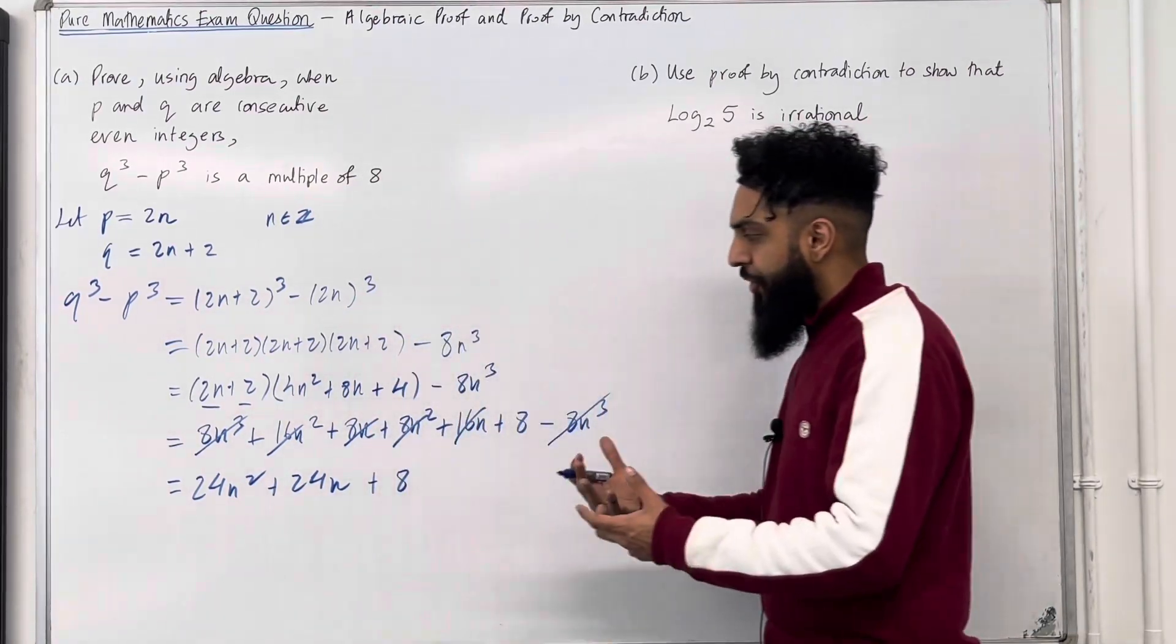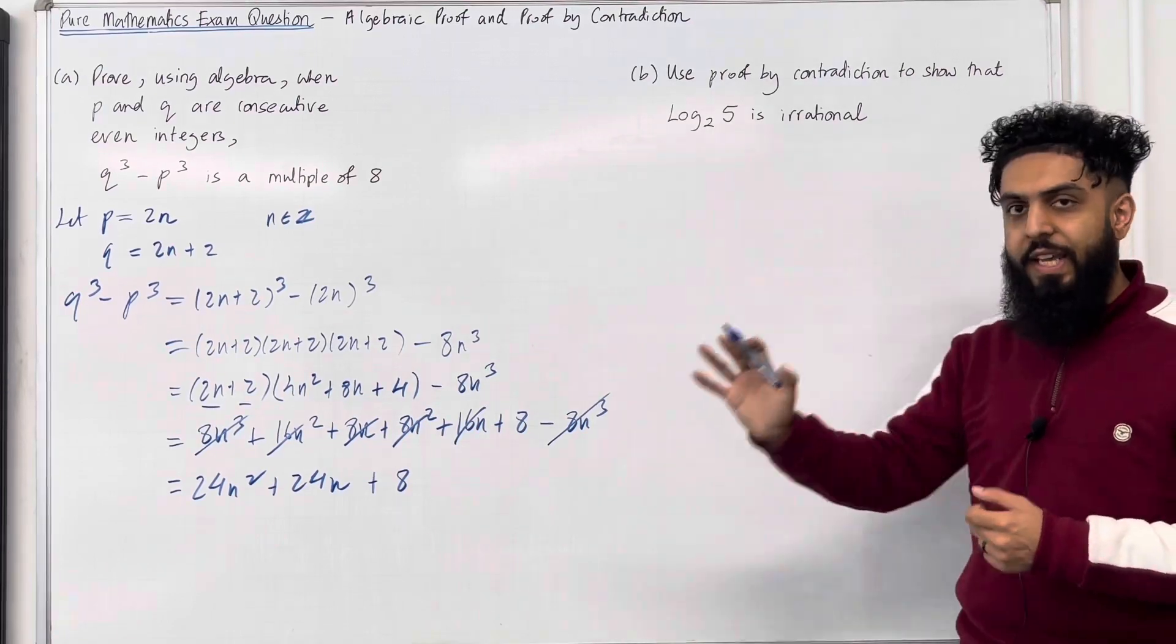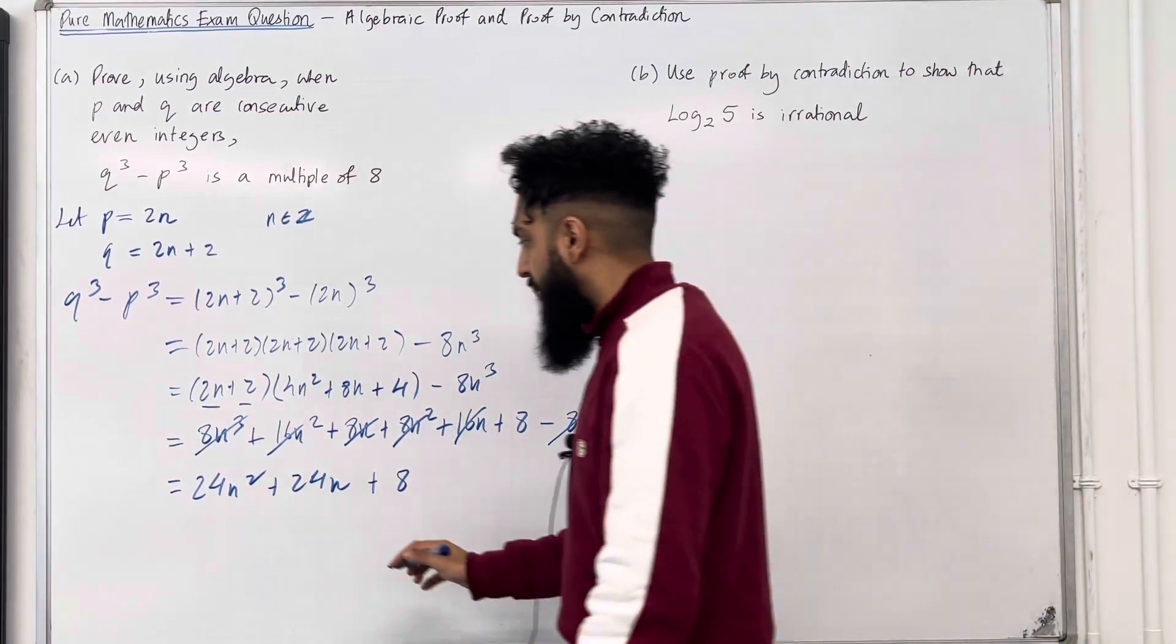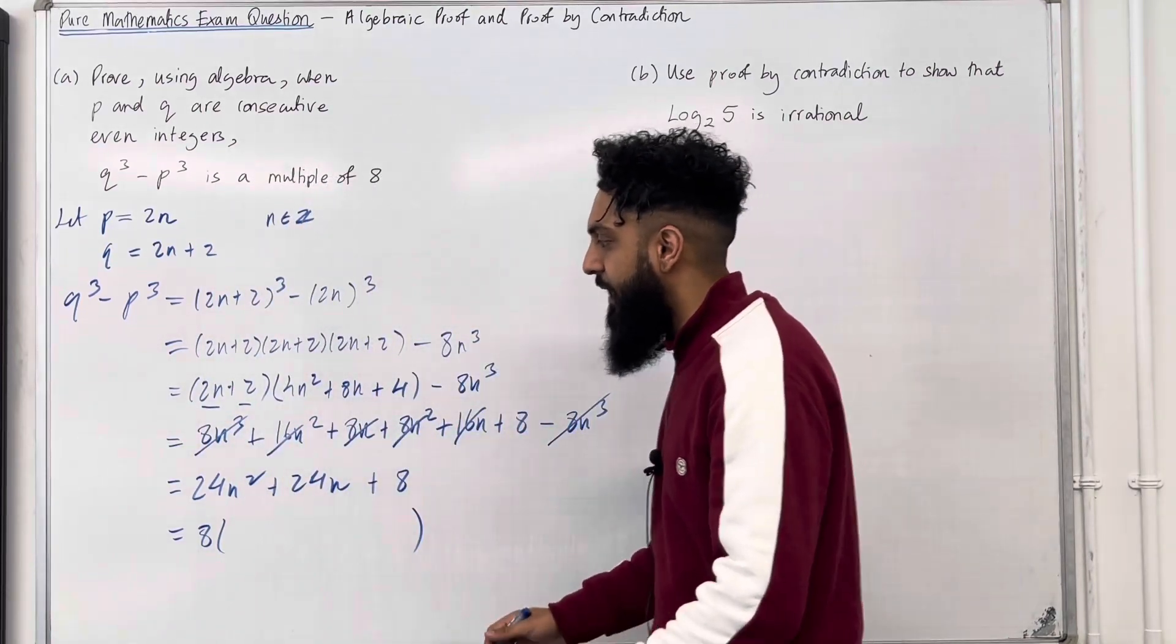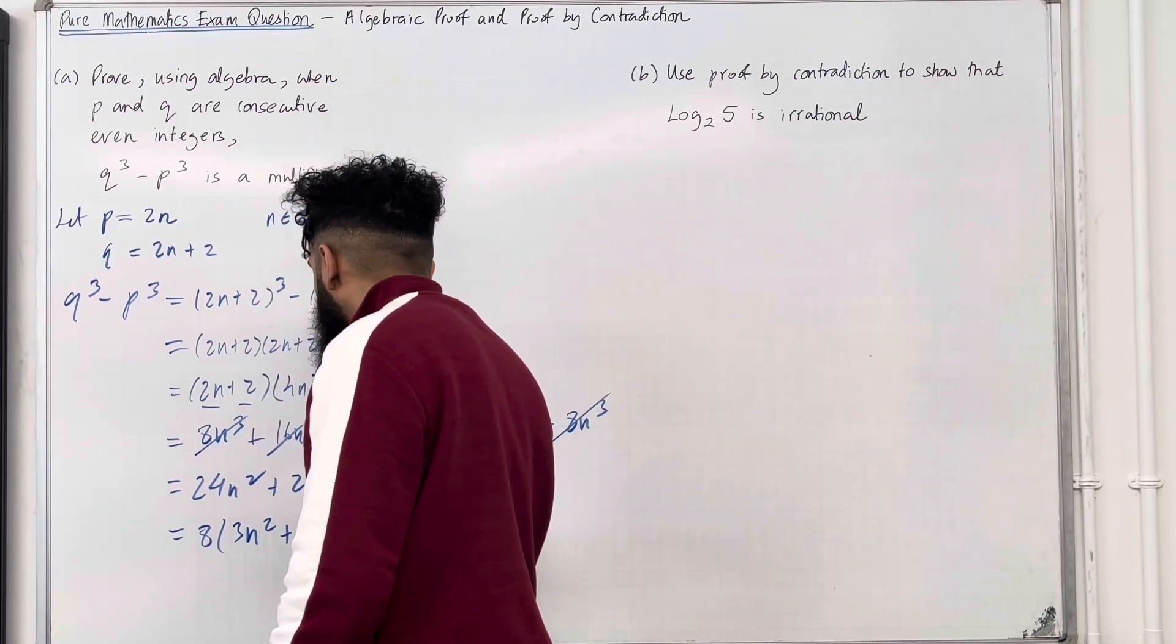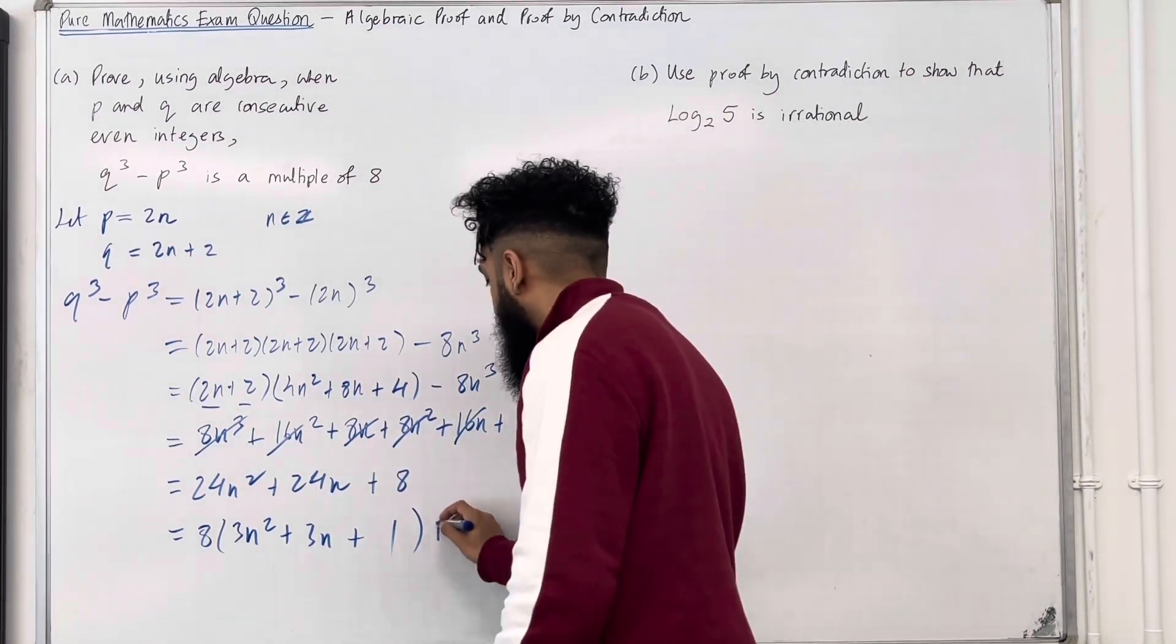So we must show that this expression is a multiple of 8. To do this, we must take out a factor of 8. So if I take out a factor of 8 inside the bracket, I'll get 3N squared plus 3N plus 1. That there is a multiple of 8.